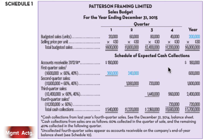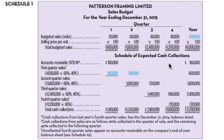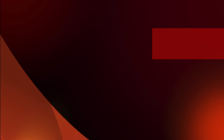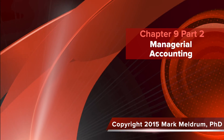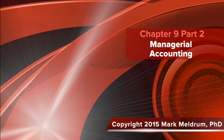If you don't start with sales, you can't do the production or the cash budget. And if you can't do the production budget, you can't do the raw materials budget, the direct labor budget, or the manufacturing overhead budget. So your sales budget is the first one to get done. We'll see you next time.